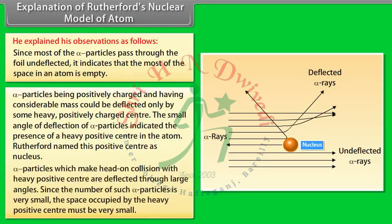3. Alpha particles which make head-on collisions with the heavy positive center are deflected through large angles. Since the number of such alpha particles is very small, the space occupied by the heavy positive center must be very small.